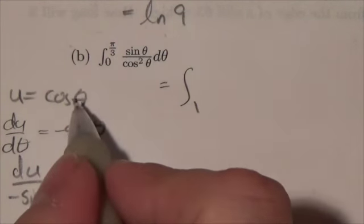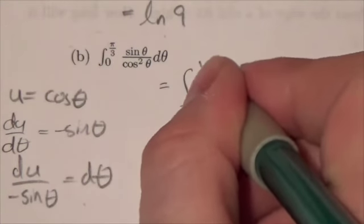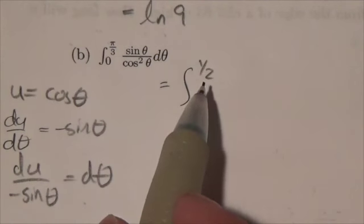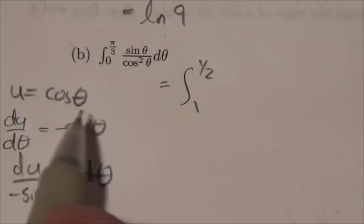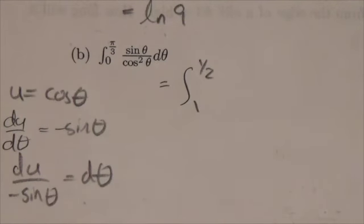If you plug pi over 3, for cosine you get 1 half. So we're integrating from a higher value to a lower value. Don't worry about that. That is going to have an impact on the sign of the overall answer. I just got to let it happen.